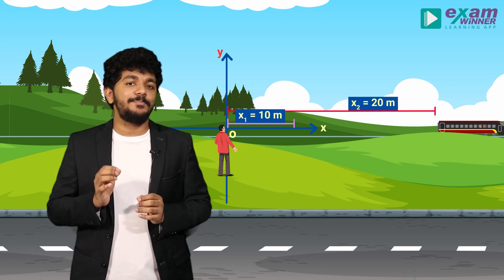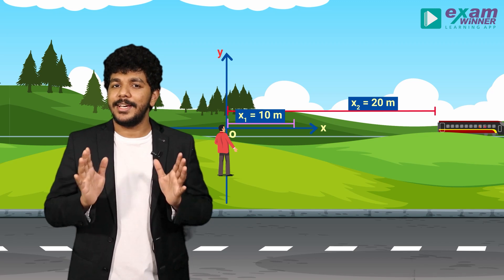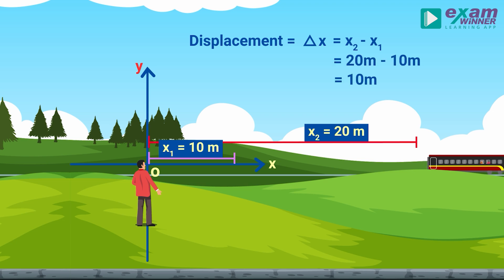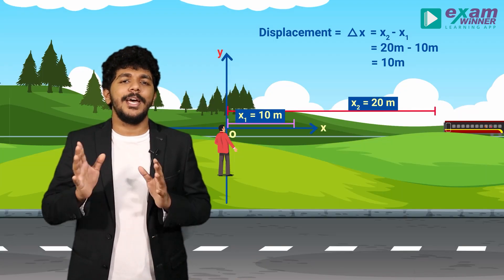Now we find the displacement, which is denoted by delta x. The change in position is equal to the final position x2 minus the initial position x1. So delta x equals x2 minus x1, which is 20 meters minus 10 meters, giving us 10 meters.